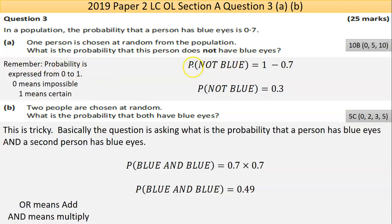The answer here is, I should read the question: In a population, the probability that a person has blue eyes is 0.7. Now probability is scored between 0 and 1 as set here. So 0.7, it's fairly likely that somebody is going to have blue eyes in any person picked randomly from that population. So one person is chosen at random from that population. What's the probability that this person does not have blue eyes? Well if 0.7 is blue eyes, the difference between that and 1 is 0.3, that's not blue. That's fairly straightforward and there's a good 10 marks for that.